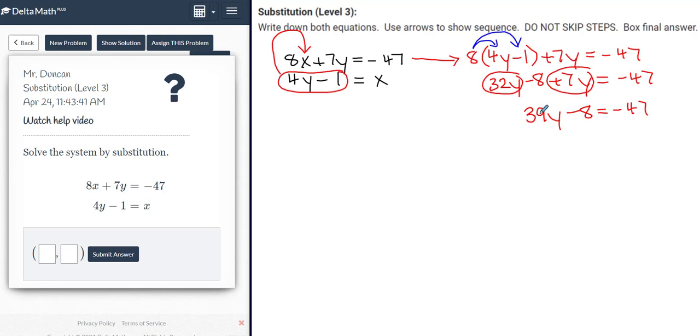To isolate the 39y on the left, I'll remove this constant term of negative 8 by adding 8 on both sides of the equation. So those will cancel, which means that the left side of the equation is 39y, and then negative 47 plus 8 results in a negative 39.